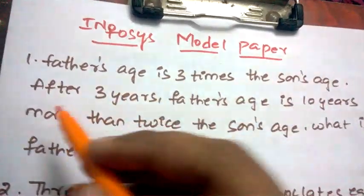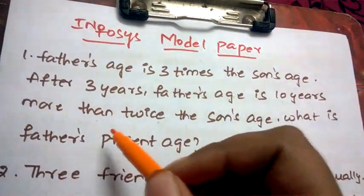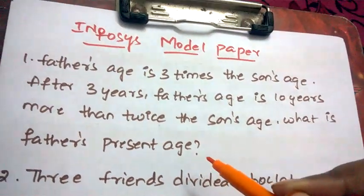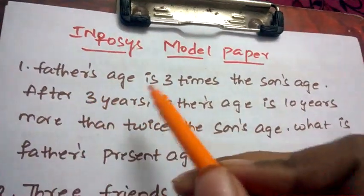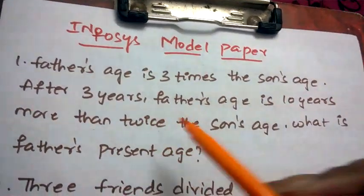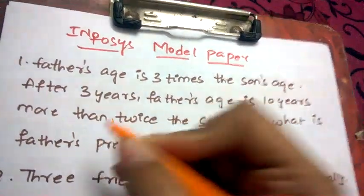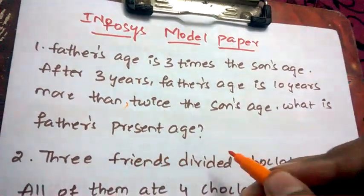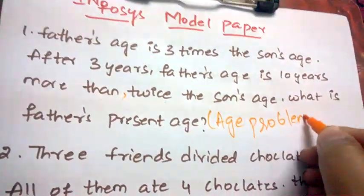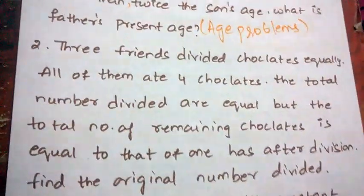Our first question is an age problem: Father's age is three times the son's age. After three years, the father's age is 10 years more than twice the son's age. What is the father's present age? In quantitative aptitude age problems, you will find similar problems.